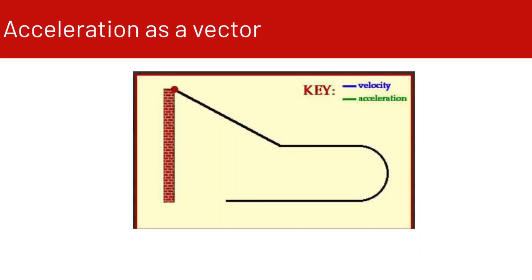We're going to watch an animation of a marble rolling down a hill, along a straightaway, around a curve, and then another straightaway. Watch the vectors: the velocity vector in blue and the acceleration vector in green, and notice how they change throughout the motion.